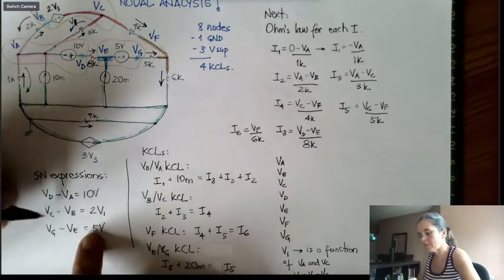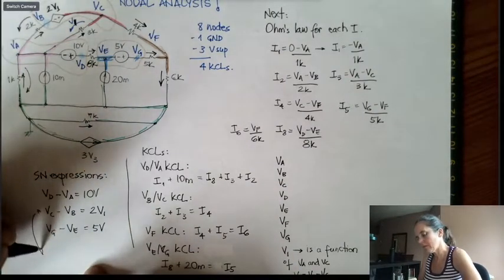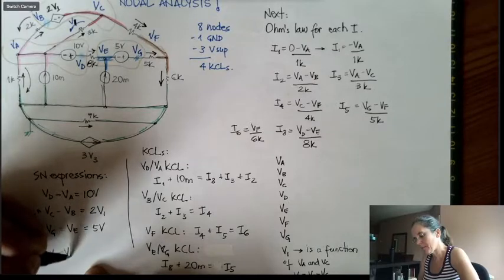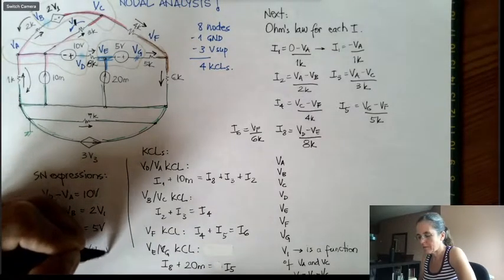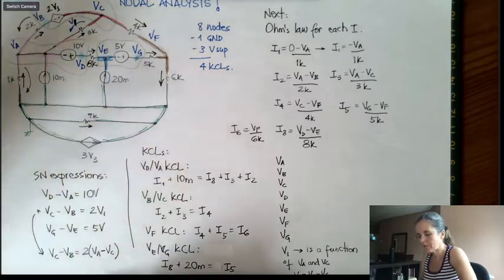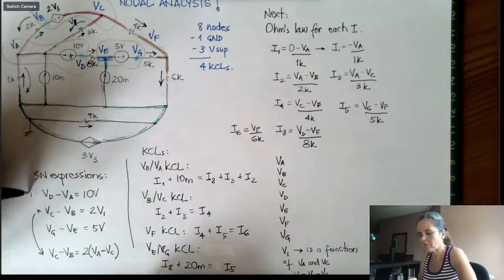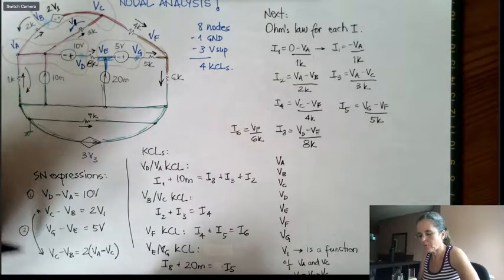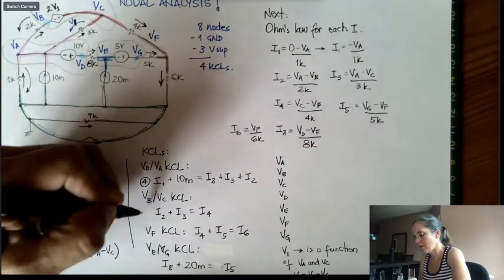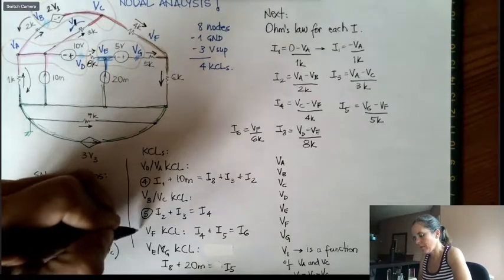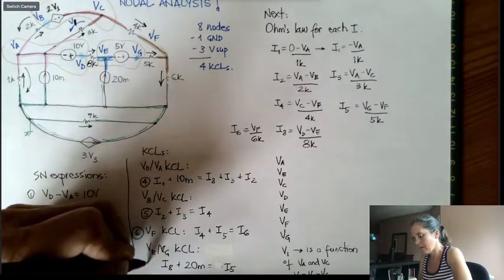So this expression here, VC minus VB is 2 times VA minus VC. So in these equations here, equation number 1, equation number 2, 3, and then 4, 5, 6, and 7...